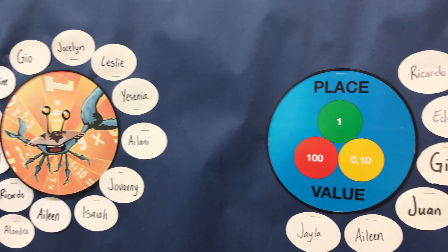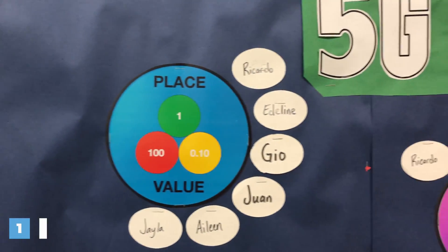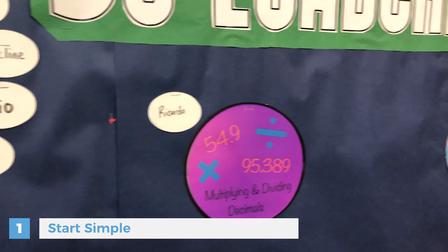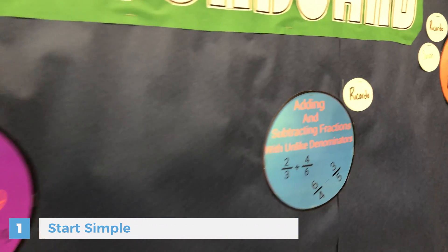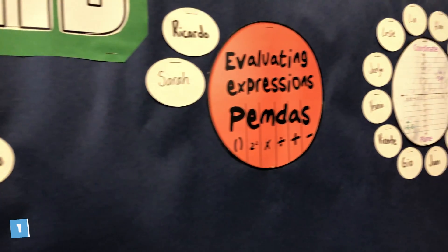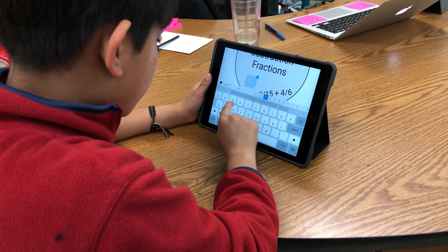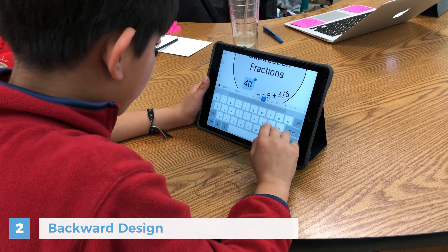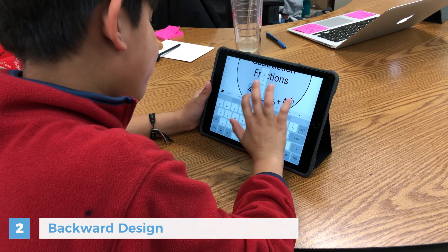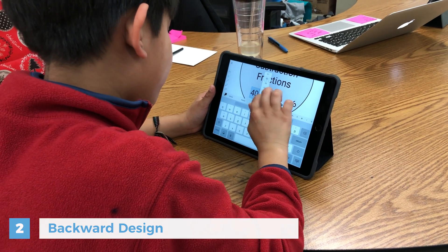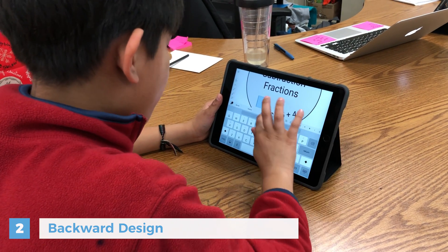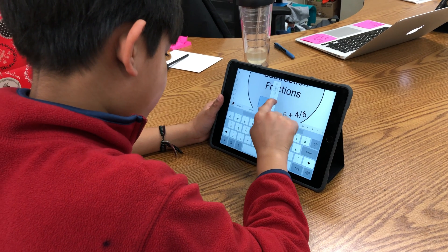If you're interested in gamifying your classroom, I'd recommend starting very simple. In my classroom, we started badging about a quarter into the school year, and we started with just one subject — that was math. When looking at the content for these badges, you want to be using backwards design. Essentially, you have the end goal in mind first, then you establish the badge, the criteria for what the badge will entail, and then you teach that content to students in order for them to earn a certain badge.